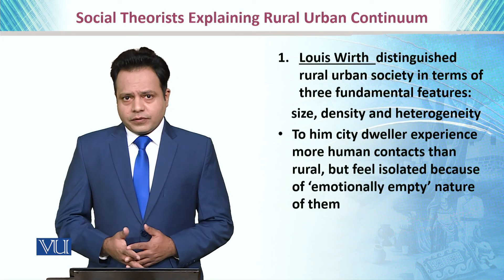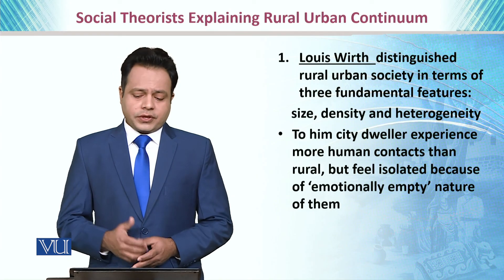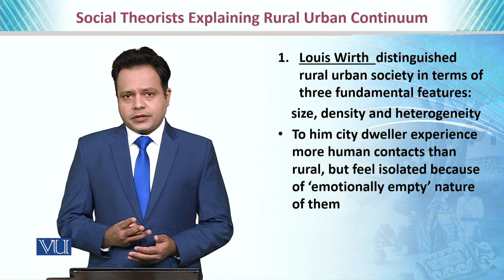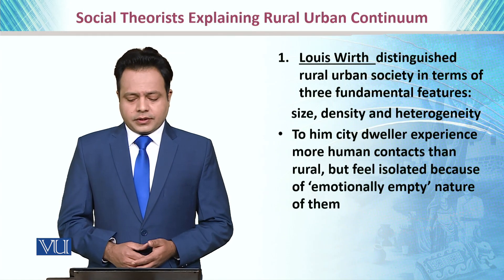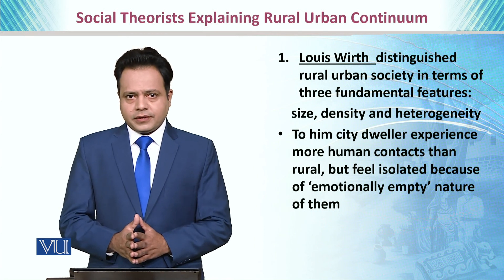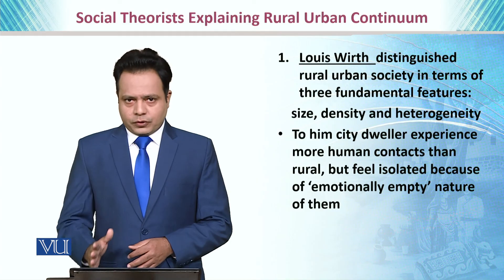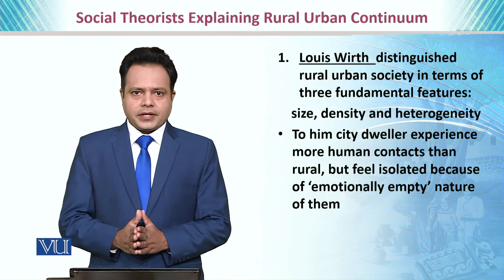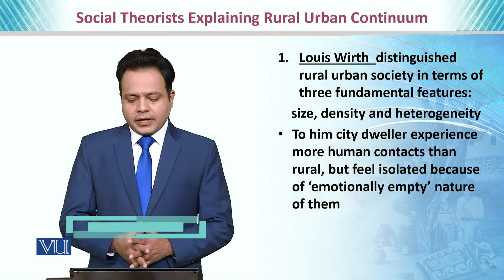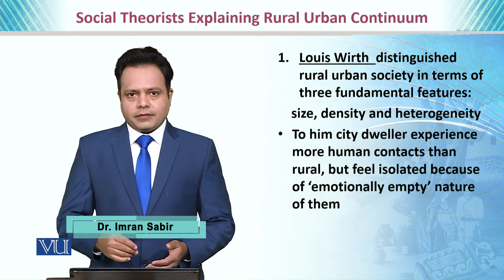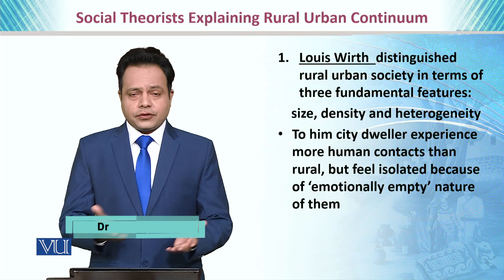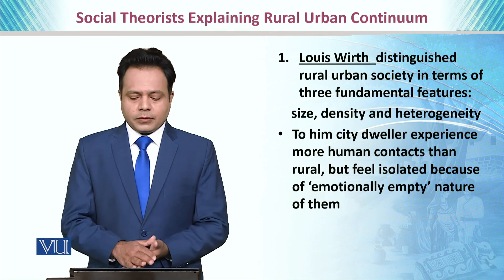First of all, we will talk about Louis Wirth, who distinguished the rural and urban society in terms of three fundamental characteristics. Number one is size — that it should have a specific population size. Then population density, defined as the number of inhabitants per square kilometer. And then heterogeneity, meaning what kind of variations related to social life are available.